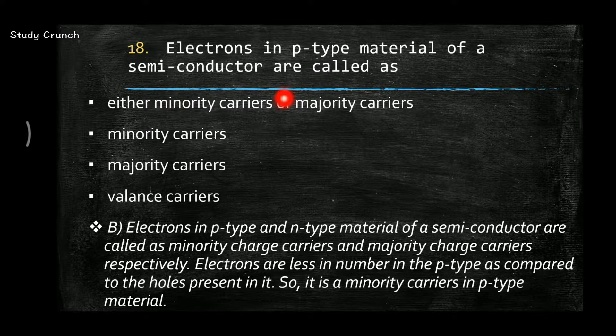Next, electrons in a P-type material of a semiconductor are called minority carriers. Electrons in P-type and N-type of a semiconductor are called minority carriers and majority carriers respectively. Electrons are less in number in P-type as compared to holes present in it, so they are minority carriers in P-type material.